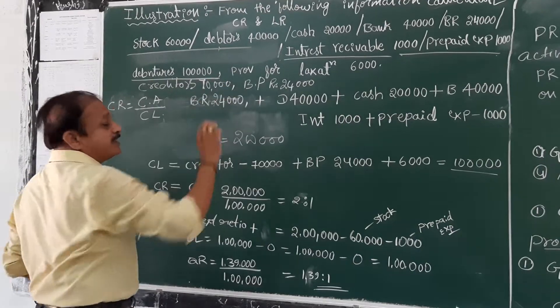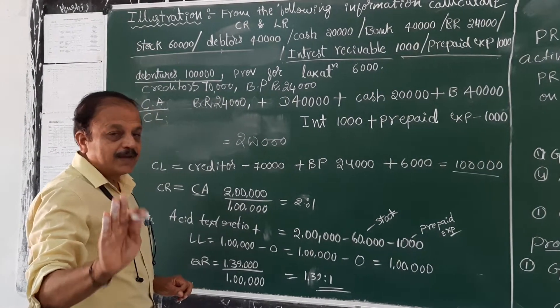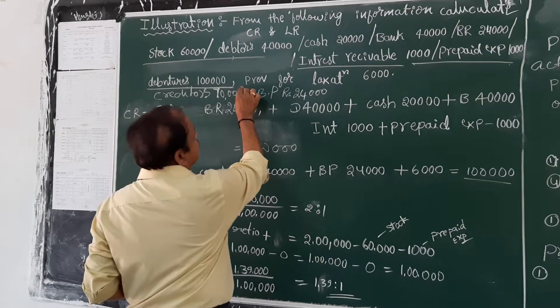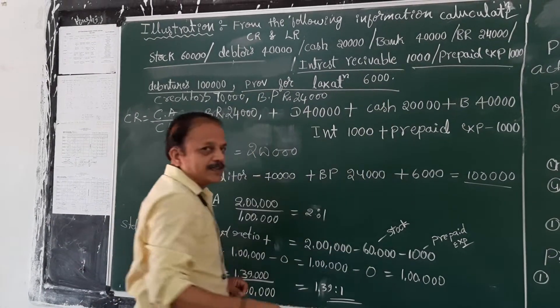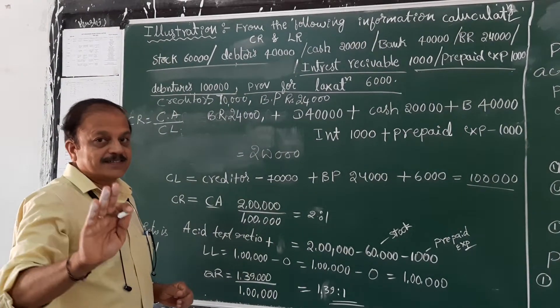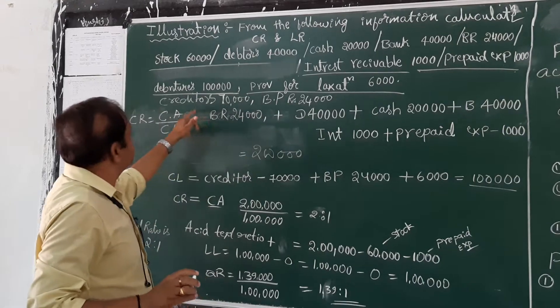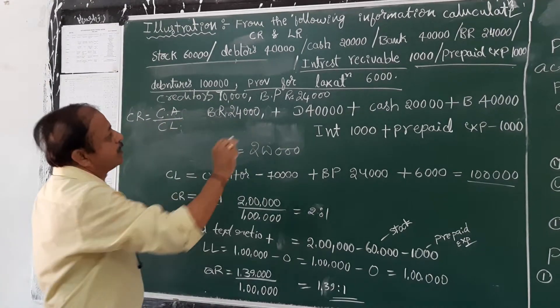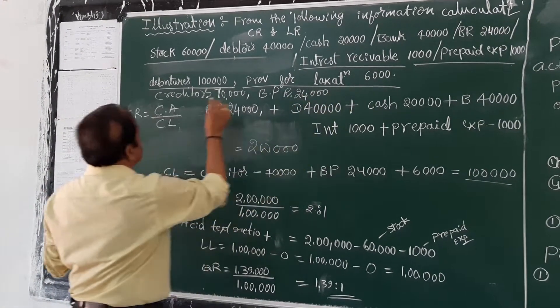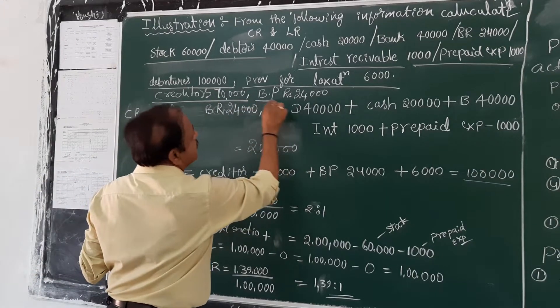Debentures - no, this is not current assets. This is long term liability. And provision for taxation is also current liabilities, not current assets. This is current liability. Let us see what are current liabilities: provision for taxation, creditors and bills payable.